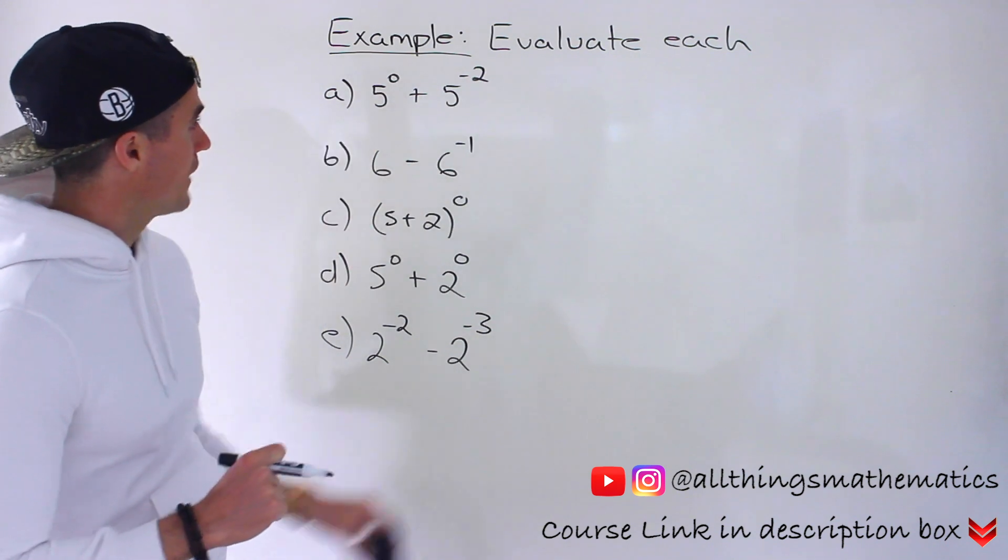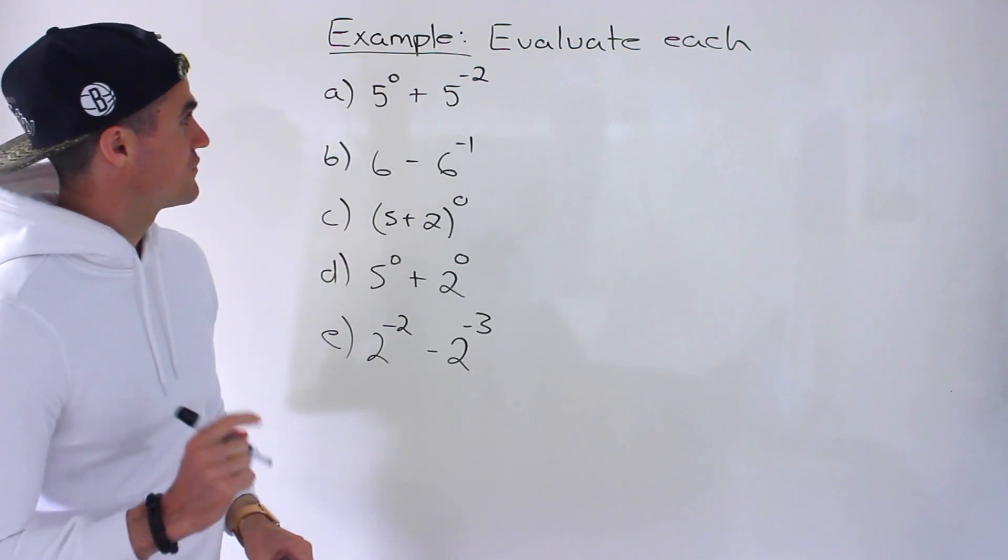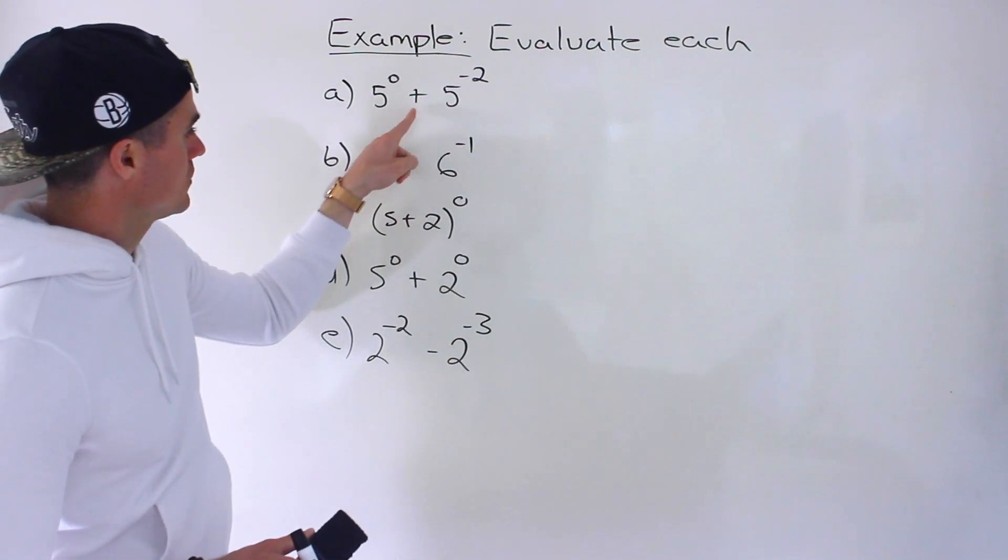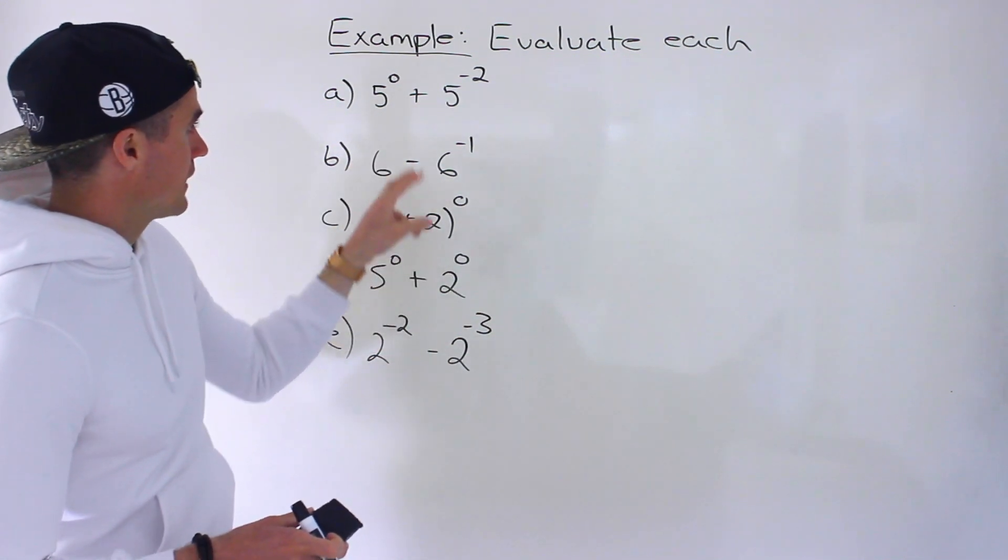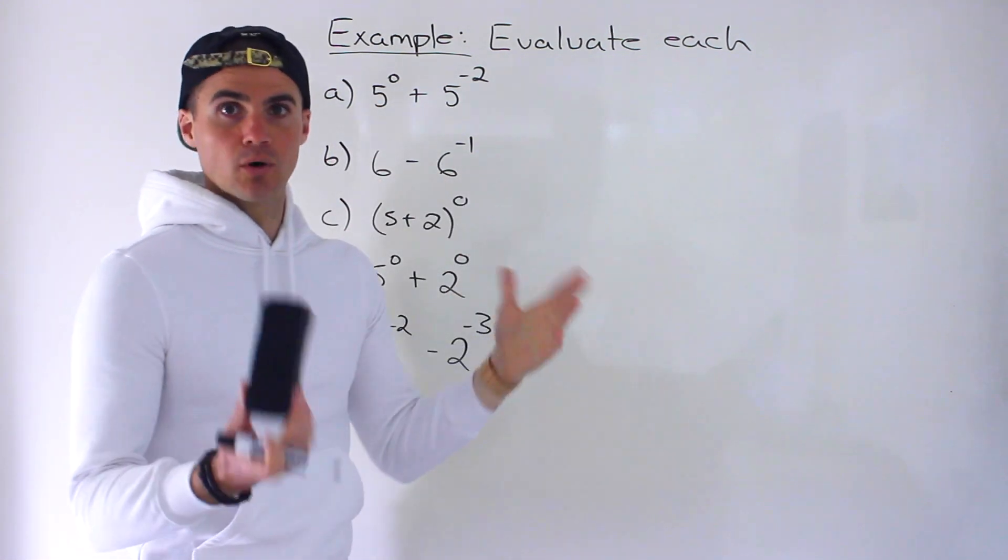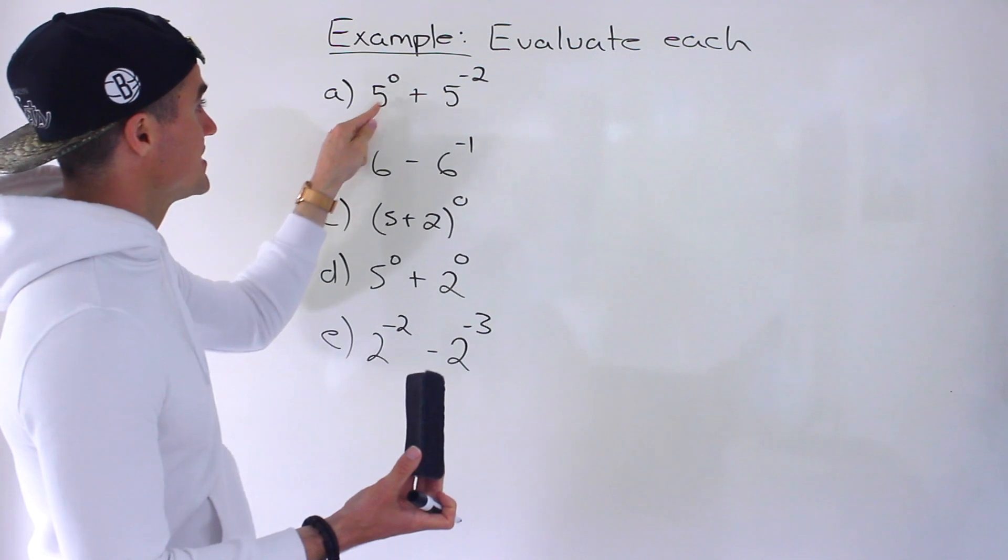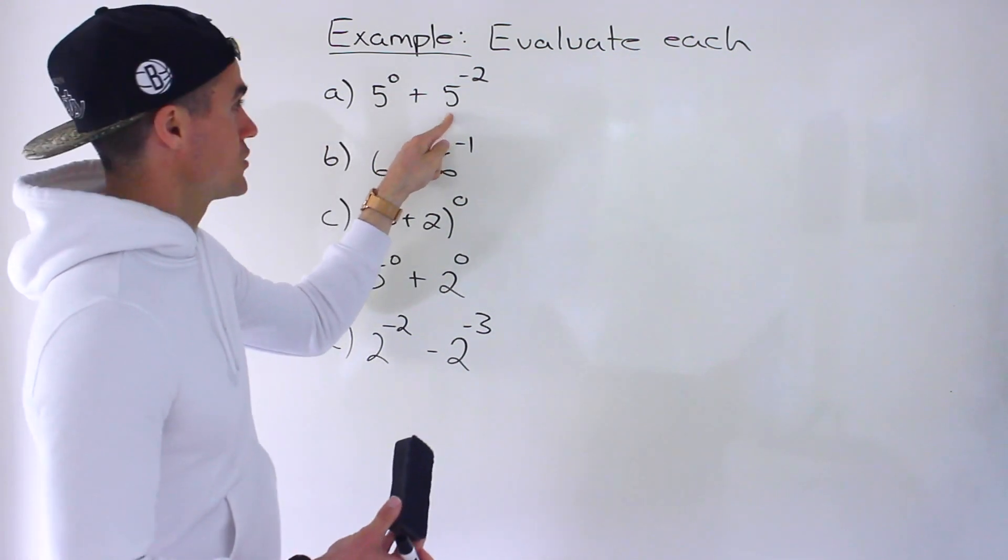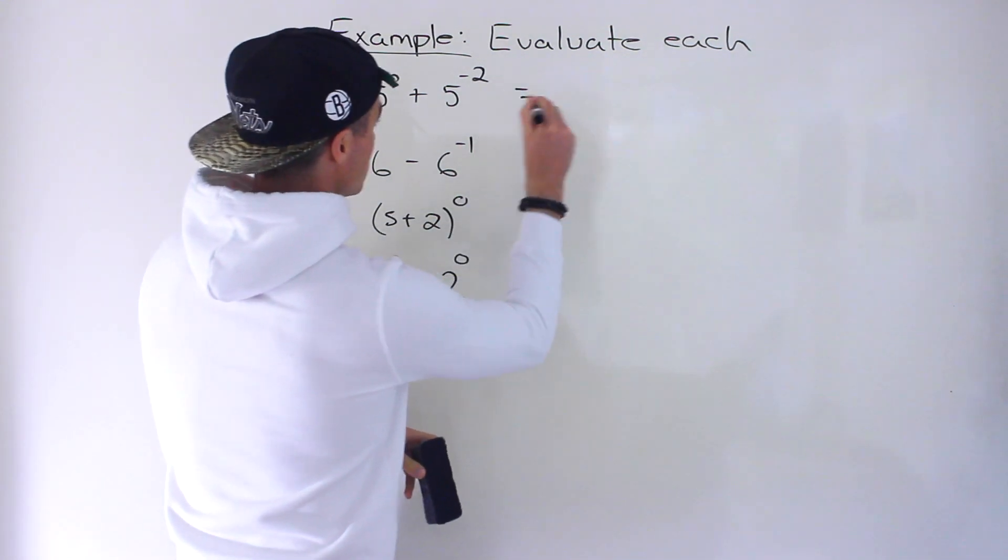So we got to take each of these expressions here and we have to evaluate them. Starting with part a, we got 5 to the power of 0 plus 5 to the power of negative 2. Now notice that there is an addition in the middle of these. And so before addition or subtraction, according to BEDMAS, we have to deal with the exponent. So we have an exponential expression here, an exponential expression there. Let's do that first.